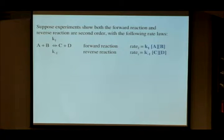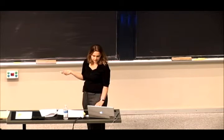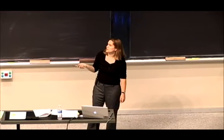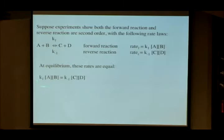Here we have these rates, and at equilibrium, those rates are going to be equal. At equilibrium, k₁[A][B] is going to be equal to k₋₁[C][D]. And at equilibrium, we have [C][D] over [A][B] equals k₁ over k₋₁.